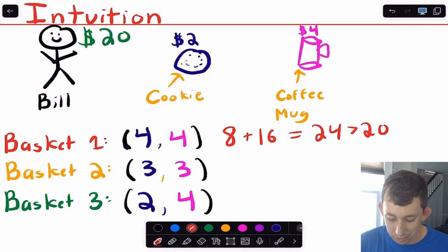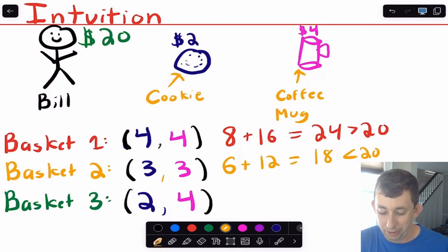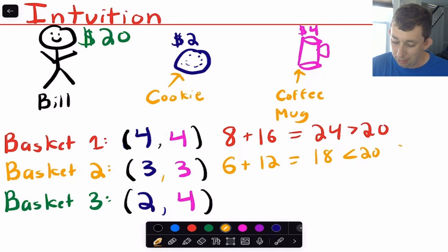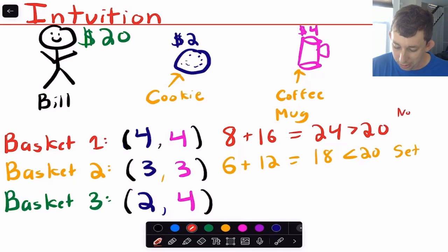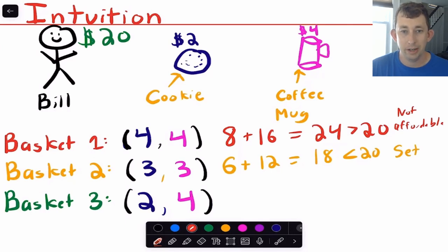Basket two has three cookies and three coffee mugs. Three cookies is $6, and three mugs is $12, for a grand total of $18, which is less than $20. So this bundle is affordable for Bill. However, Bill does not spend all his money — he could actually buy another cookie. Because this bundle is affordable but doesn't spend all his money, we say this bundle is in Bill's budget set. Basket one is simply not affordable.